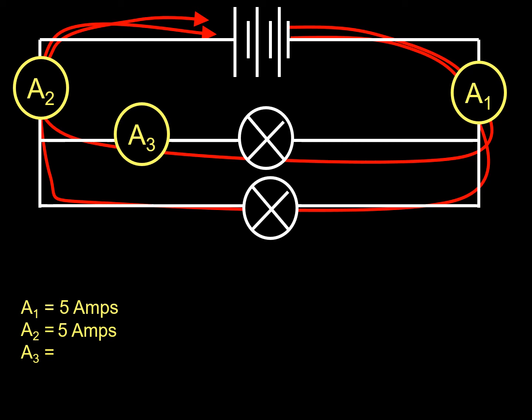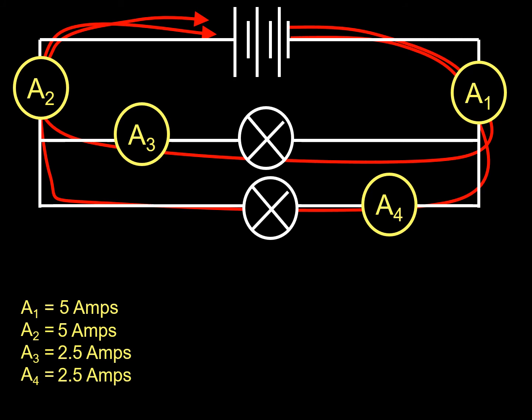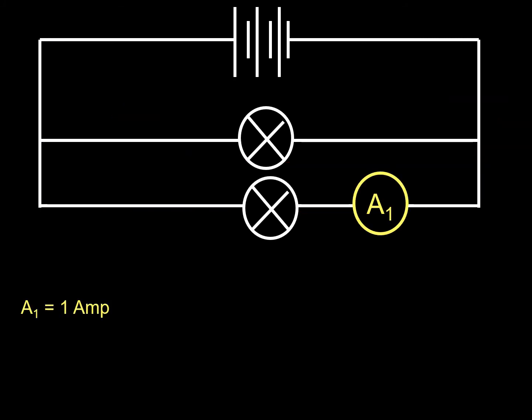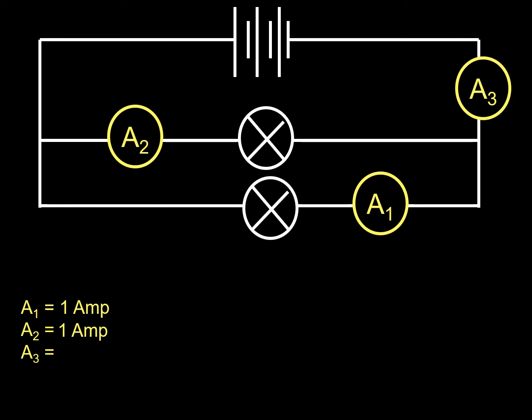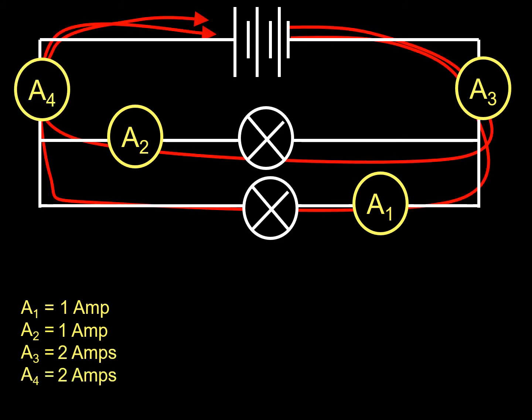What about A3? It's 2.5 amps — because it splits. You can see it splitting, so each branch gets half. That one there is also 2.5 amps. And if I measure here and we've got 1 amp, what would it be on the other side? 1 amp. And then before the split? 2 amps. And there? 2 amps. It's just showing it splitting up.